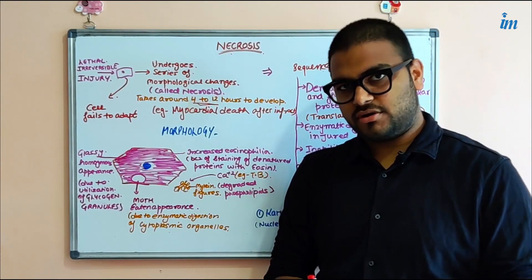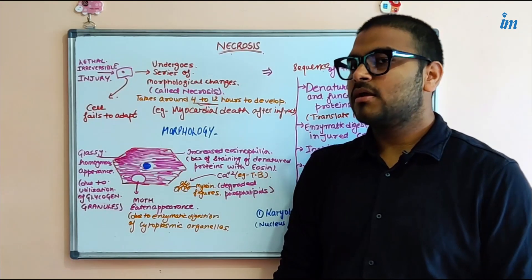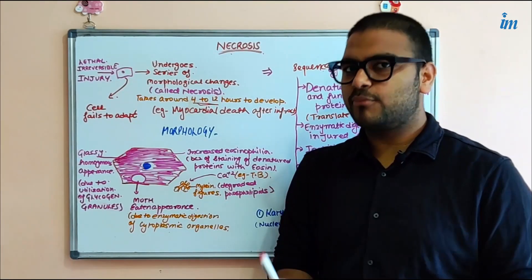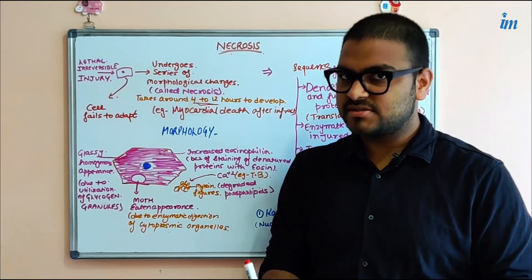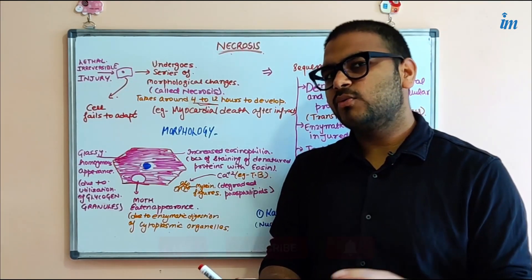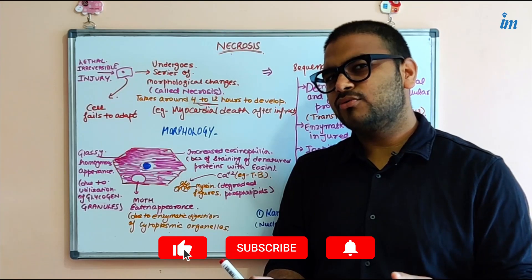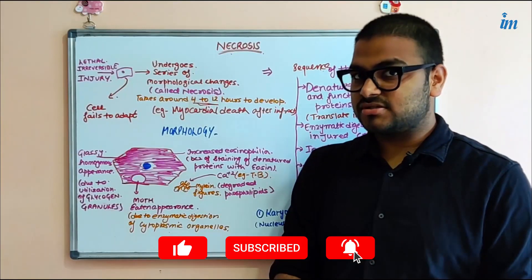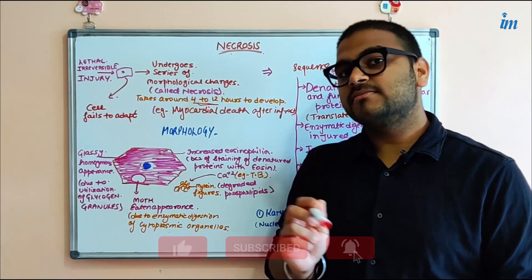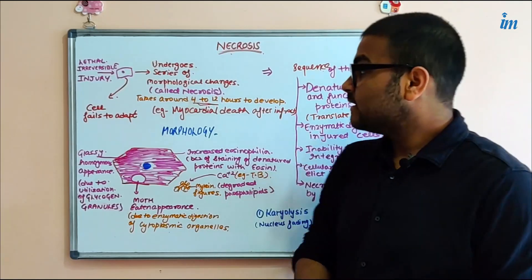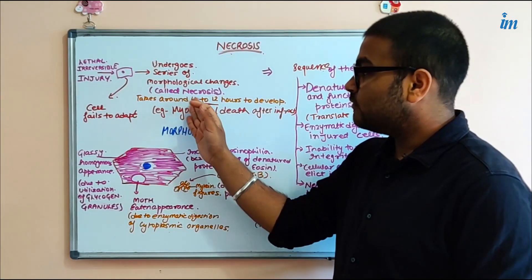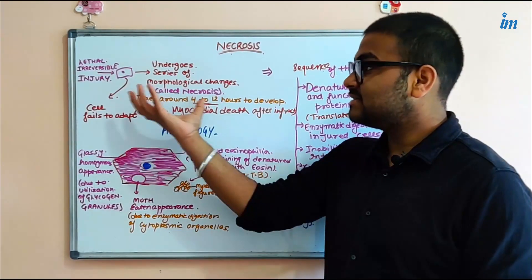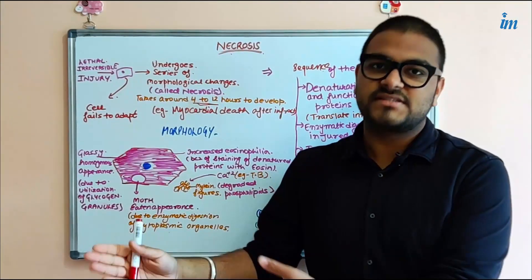Let me give you an example: sudden myocardial ischemia due to a clot. The membranes of the myocardial cells become porous, and cardiac-specific enzymes can be detected in the blood within 30 minutes to 1 hour. However, the histological changes needed to label that myocardial cell as necrotic will take longer — histological changes only appear after 4 to 12 hours.